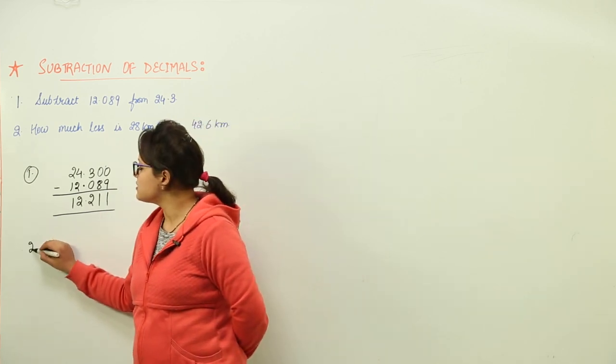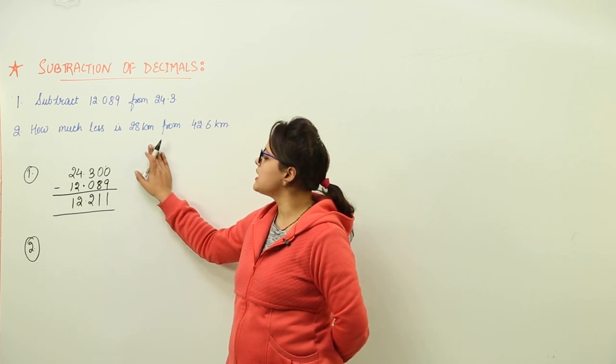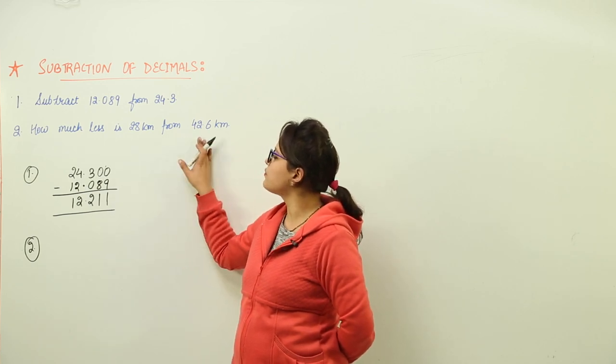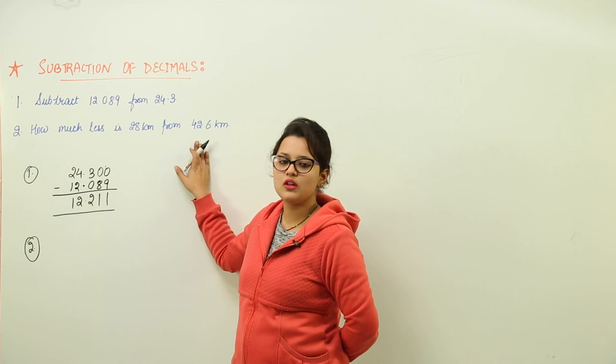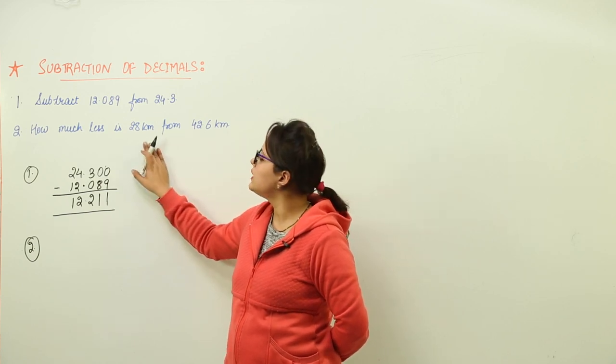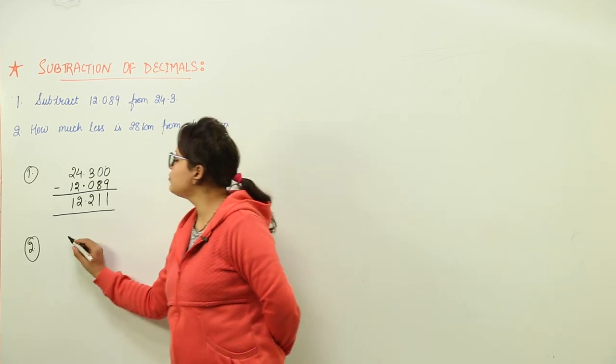The second question is asking us how much less is 28 kilometers from 42.6 kilometers. That means you have to subtract 28 kilometers from 42.6.